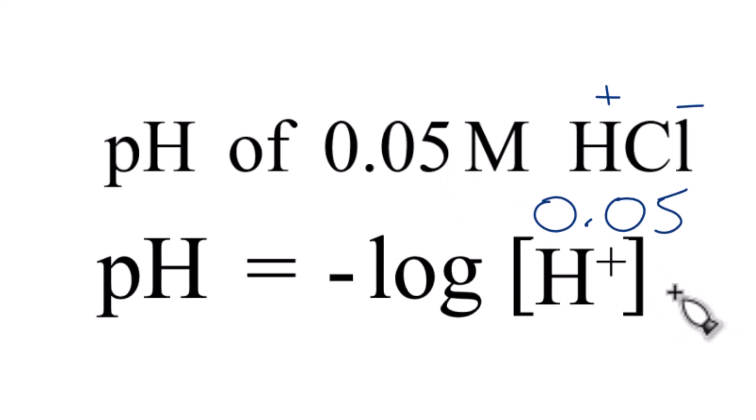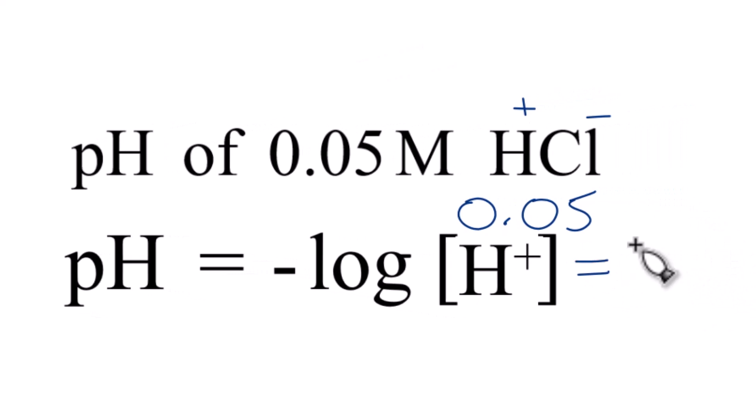So now all we need to do is take the negative log of 0.05, and we end up with 1.3. And that is the pH of a 0.05 molar solution of HCl.